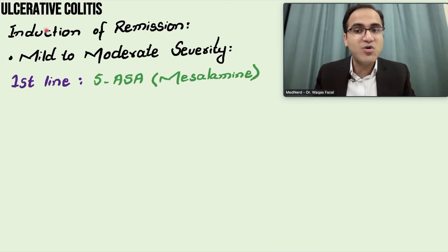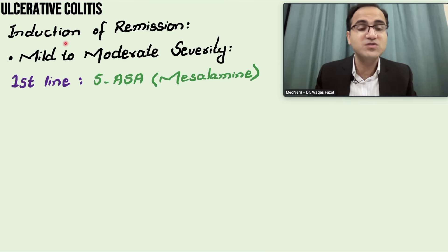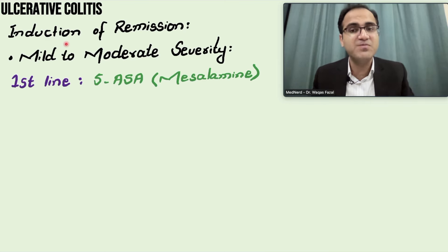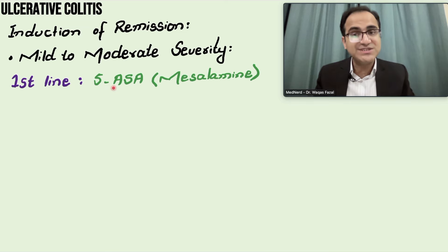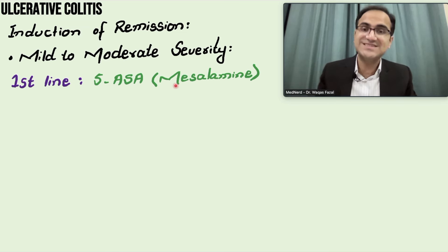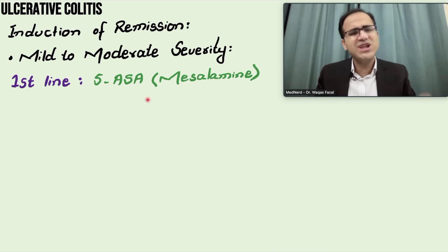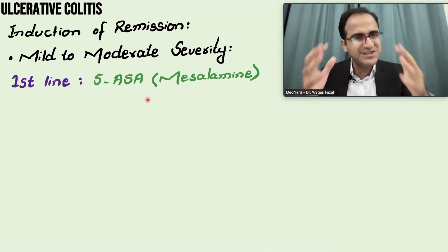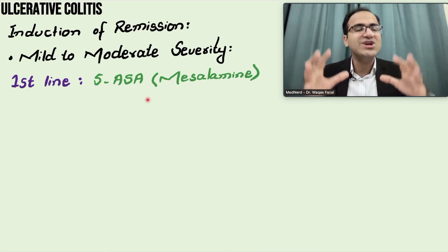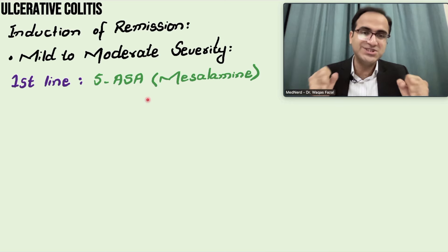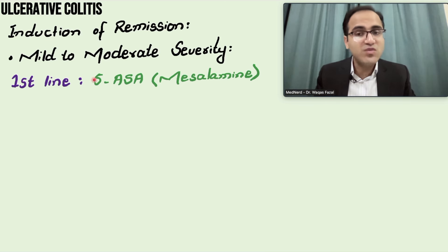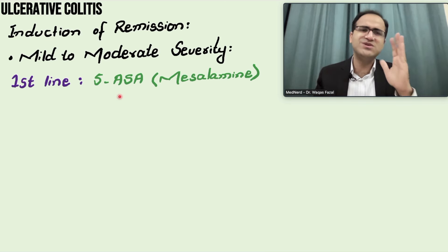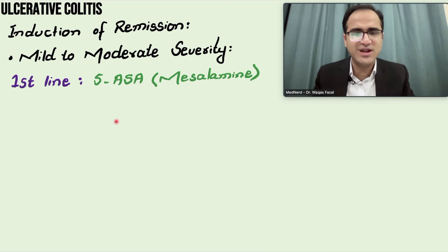When a patient with mild to moderate severity comes to you and you want to start induction of remission therapy, the first-line drug is 5-aminosalicylic acid, which is mesalamine. Mesalamine is the main drug — it reduces the migration of inflammatory cells to the gut and reduces inflammation in the colon. 5-ASA is the first and main drug used in the treatment of ulcerative colitis.